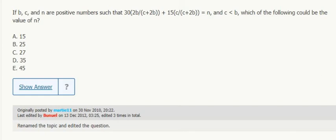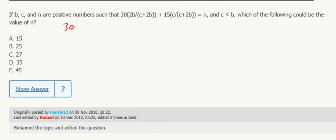A lot of parentheses here, but it's 30 times 2b over c plus 2b is 15 times c. C plus 2b is n.